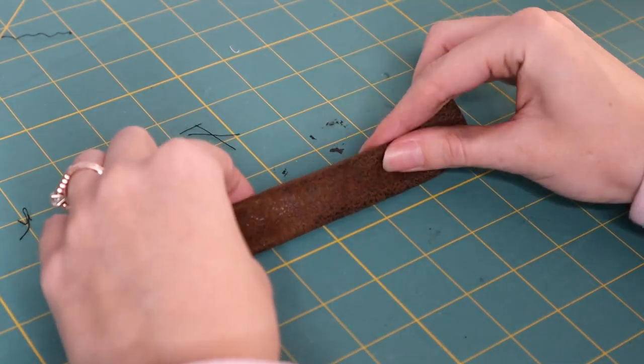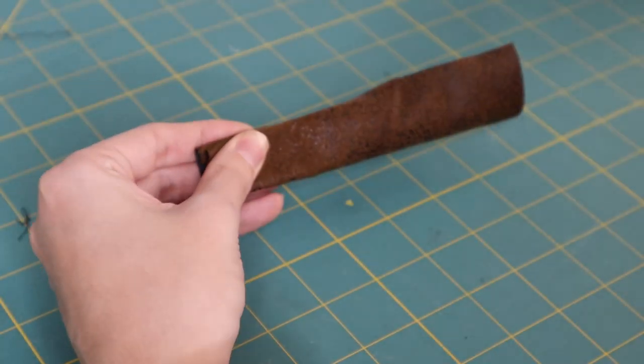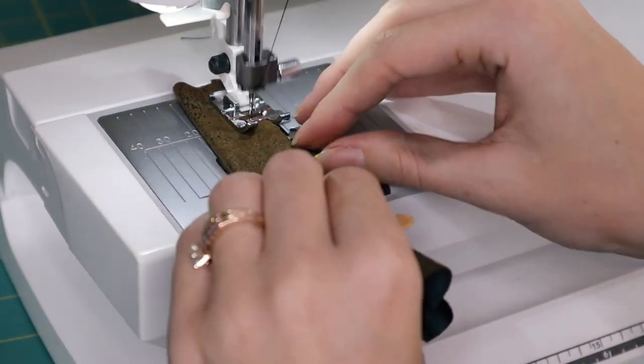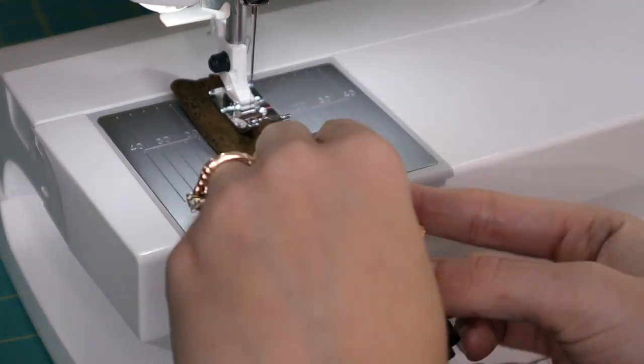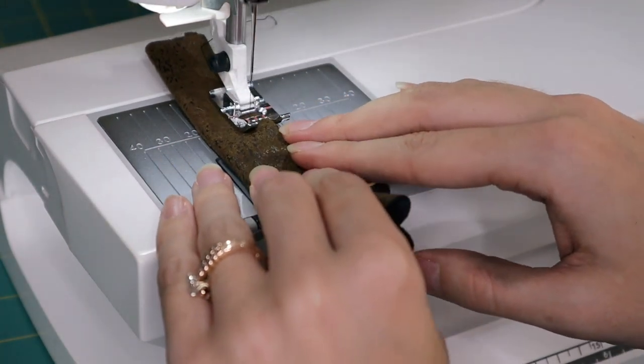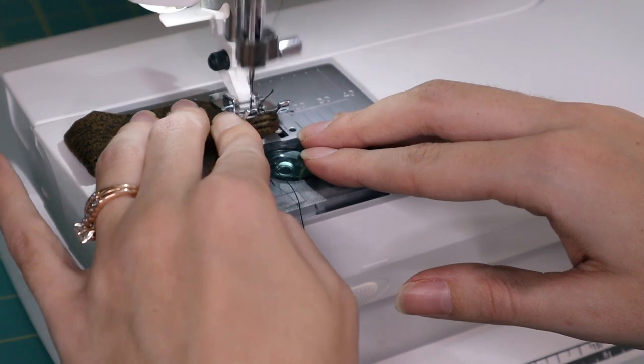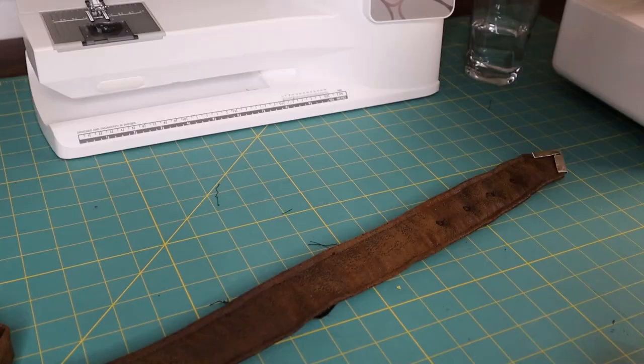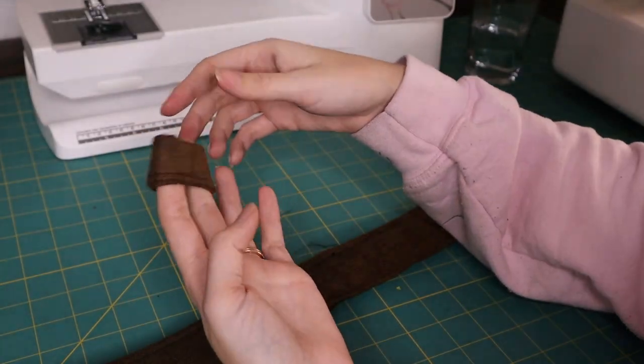Now the last decorative thing you may want to do is you may want to also add a little loop onto your belt. So I'm just going to cut out a rectangle of the faux leather. I'm going to fold in the edges and I'm going to topstitch that down. And then I'm going to sew both edges together so that I have a little belt loop. And I can just slide that onto my belt.